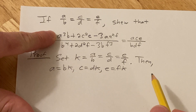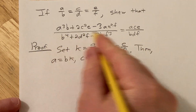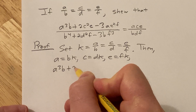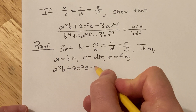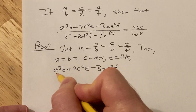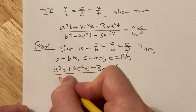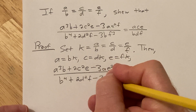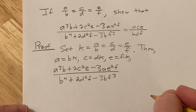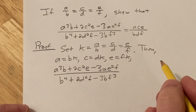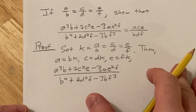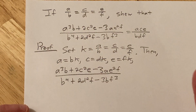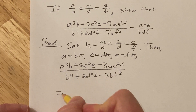Now let's carefully write this down. I'm going to write the whole expression again, being very careful. So then A cubed B plus 2C squared E minus 3AE squared F, all over B to the fourth plus 2D squared F minus 3BF cubed. This should work out to be equal to ACE over BDF. I know that because I proved the general case, and this is supposed to be a special case of that.